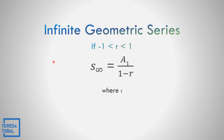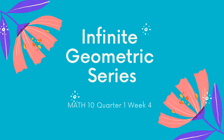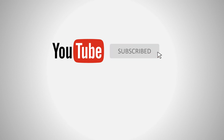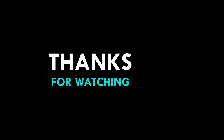So the formula for the infinite geometric series is: sum to infinity is equal to a sub 1 all over 1 minus r. Where a sub n is equal to the sum of the n-term, a sub 1 is the first term, and r is the common ratio. The sum does exist if r is greater than negative 1 but less than 1. If the value of the common ratio is greater than 1, the sum does not exist. Any questions about the infinite geometric series? Enjoy learning mathematics! I'm Teresa Tubal. Thank you so much!